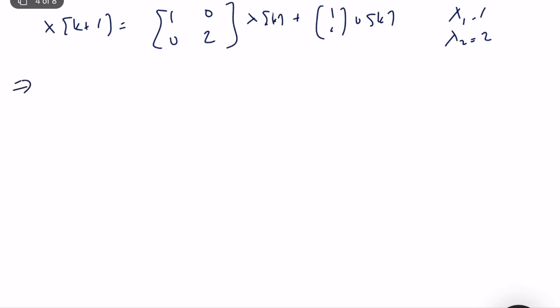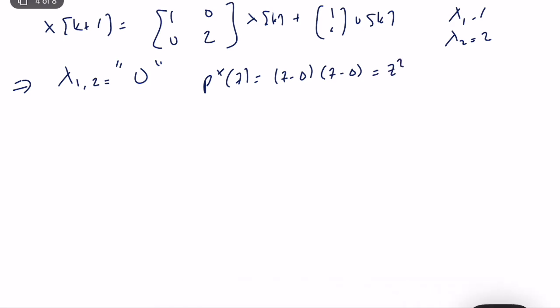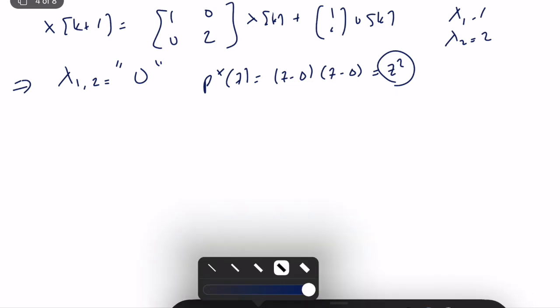What we want is deadbeat behavior. A deadbeat controller means that if we have initial conditions or perturbations, they should die out in a finite time. We can achieve deadbeat control only when all eigenvalues are located at zero — a pole location unique to discrete time. So our desired characteristic polynomial is (z − 0)(z − 0) = z². This is our requirement, and we will try to achieve it using state feedback.